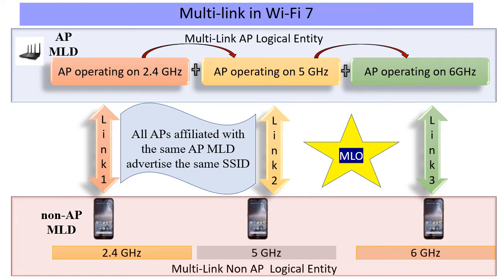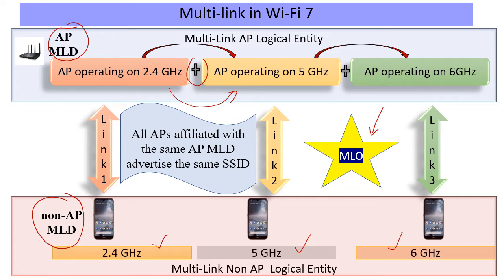Quick recap: multi-link operations involve an AP multi-link device and a non-AP multi-link device using multiple links — say, as an example, 2.4, 5, and 6 GHz — either by switching between links or using those multiple links depending on the capabilities of both sides. Remember that it's a single association from the non-AP MLD to the AP MLD on the same SSID. This is one of the most interesting features coming out in Wi-Fi 7.